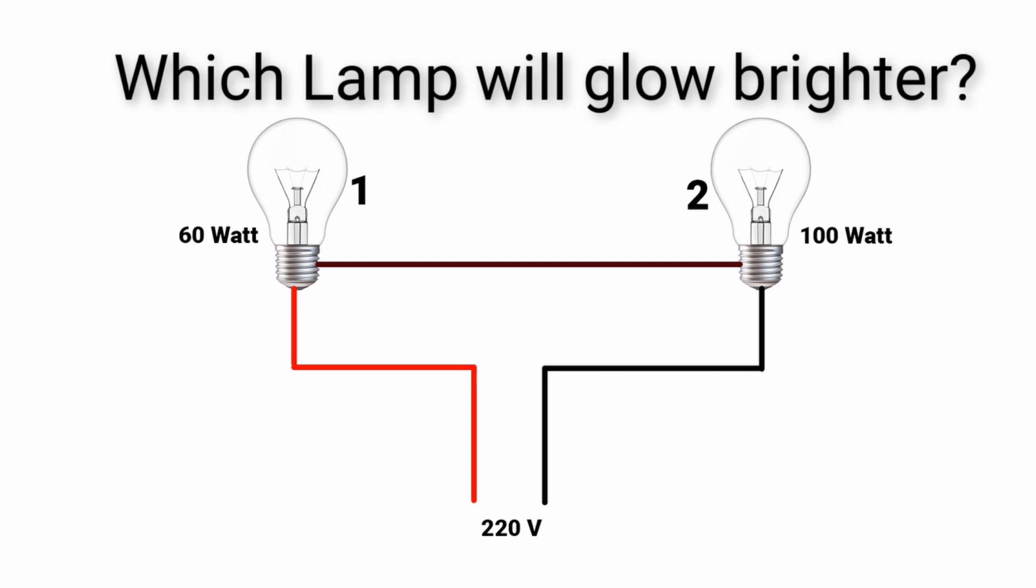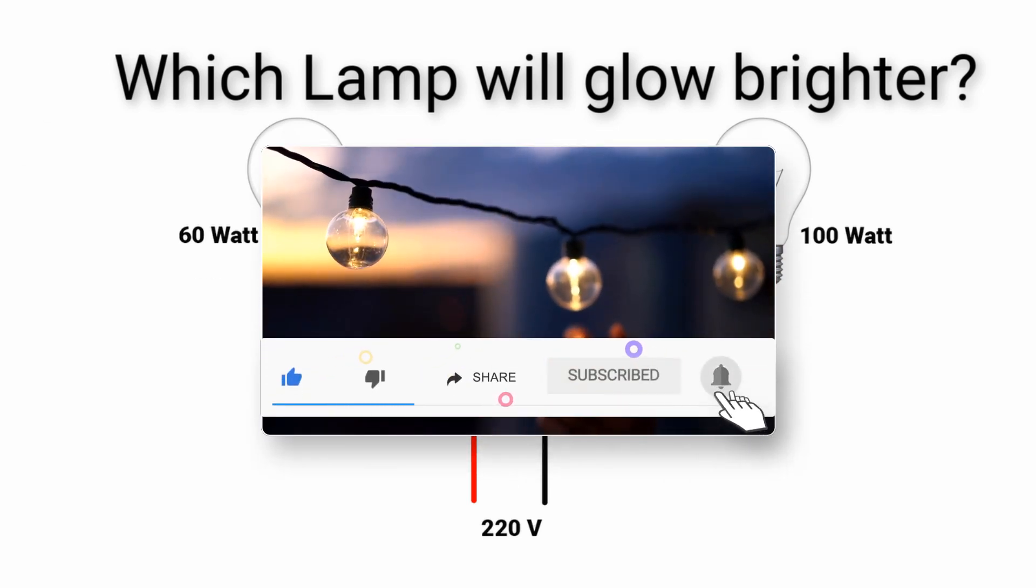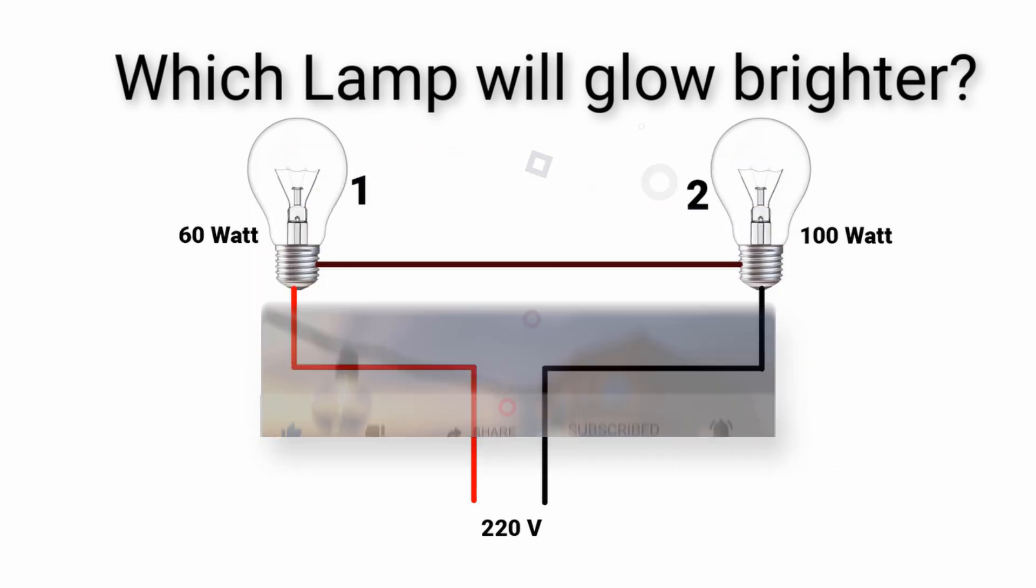In this video, Electrical Engineering Planet is going to show you a practical experiment on the question of which lamp will glow brighter. In the last video, we proved mathematically that a 60 watt lamp will glow brighter than the 100 watt lamp. Consider subscribing to Electrical Engineering Planet channel to support our community.